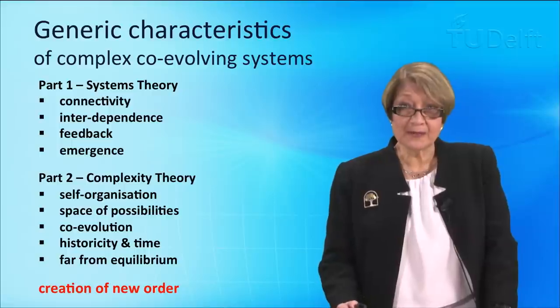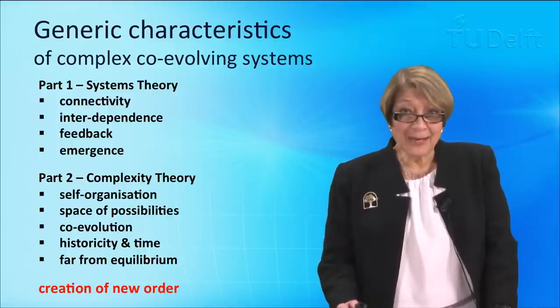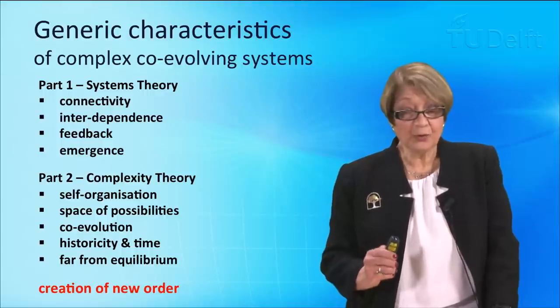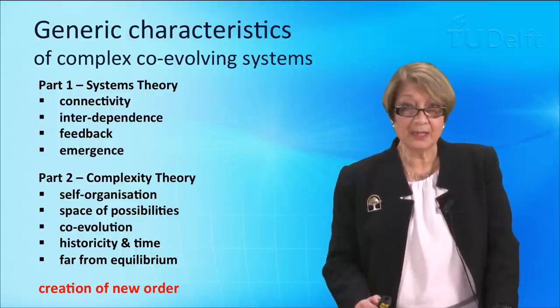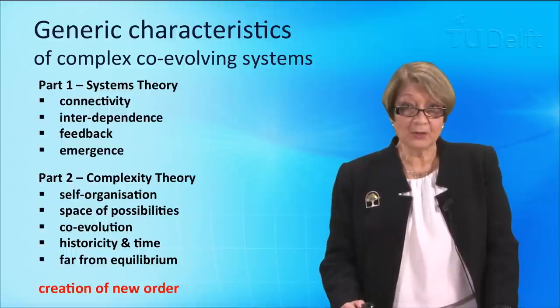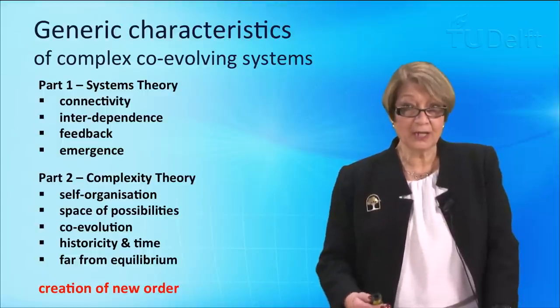So, to summarize, what we have looked at are the four basic characteristics of complex systems. These have already been articulated by systems theory, which are connectivity, interdependence, feedback and emergence. And in the next video, we will look at the other characteristics which arise from the theories of complexity. Thank you.